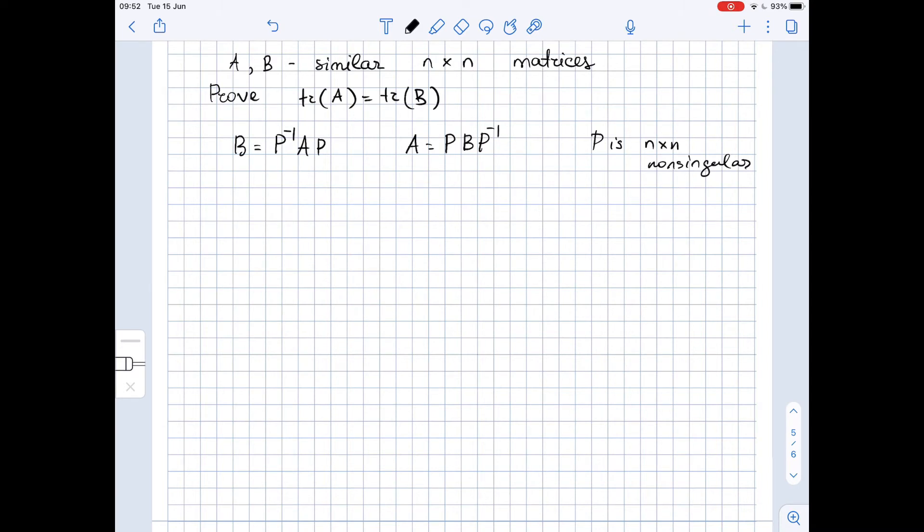Since we know that such matrix P exists, we can write down that the trace of matrix B equals the trace of P inverse times A times P.